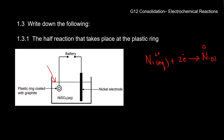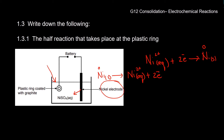The reaction happening at the nickel electrode: the nickel solid is going to move into solution as Ni²⁺. So we have Ni(s) → Ni²⁺(aq) + 2e⁻. The nickel is in the solid form with oxidation number zero, gives up two electrons, and forms the Ni²⁺ ion in aqueous solution. That is the reaction that happens at this electrode.